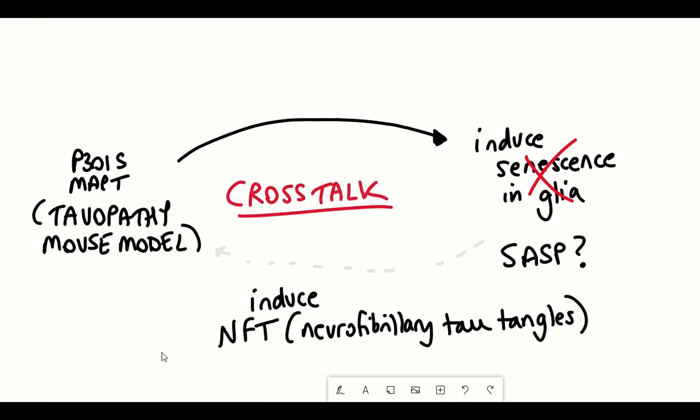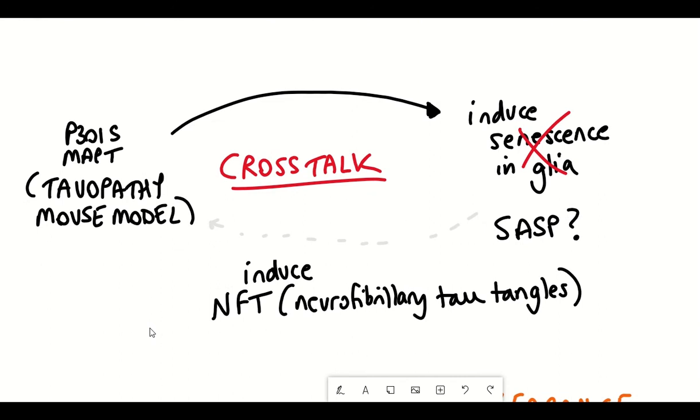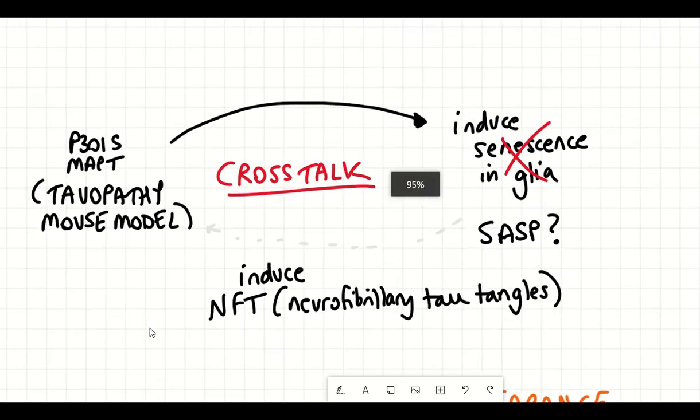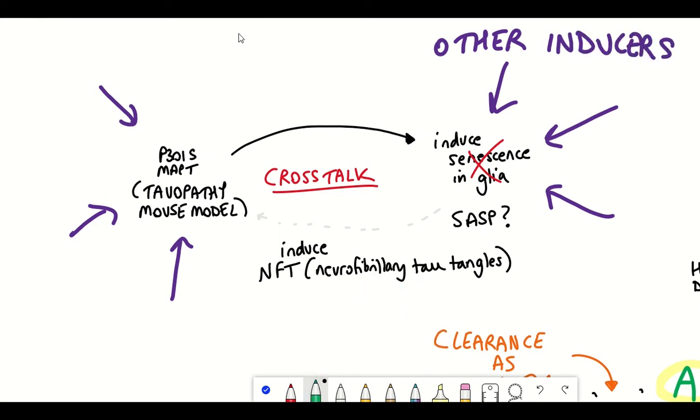There definitely seems to be a crosstalk and it's more about what is the signal that induces the cell to become senescent in the first place or what is the signal that induces this protein aggregation in tau. Is it the senescent cells or is it some additional factor inducing both of them? This question still hasn't really been solved.